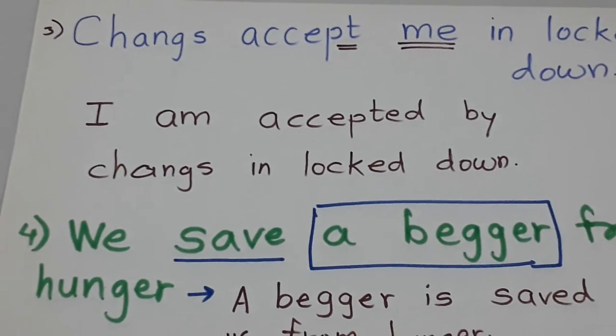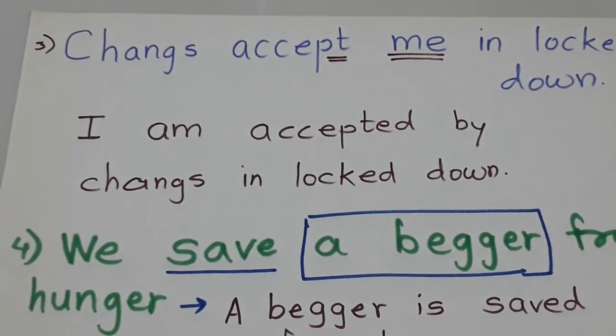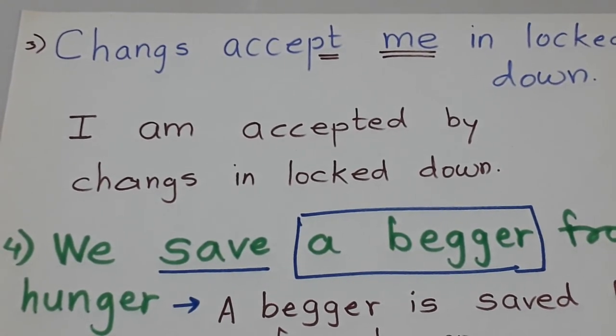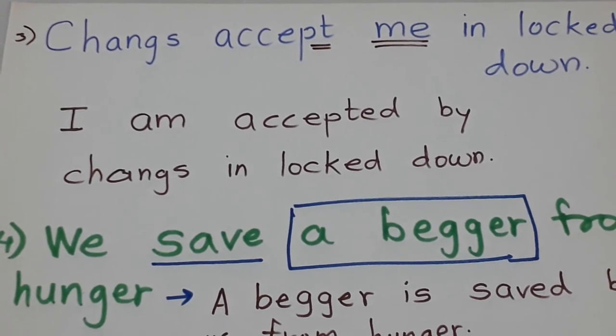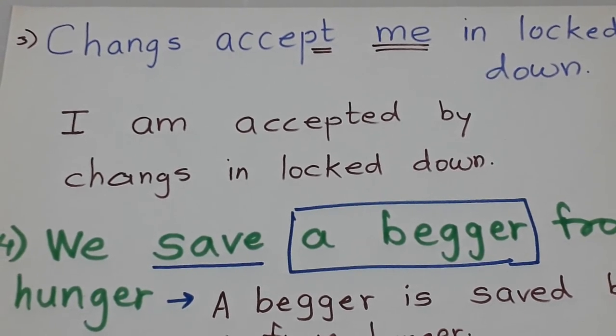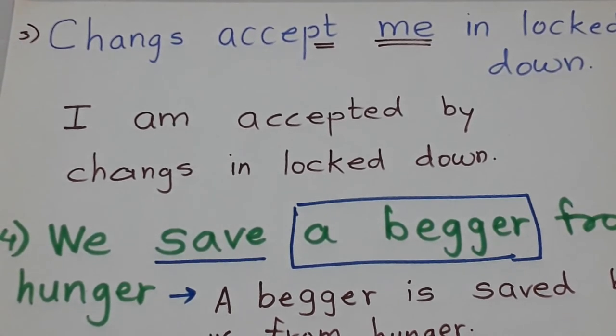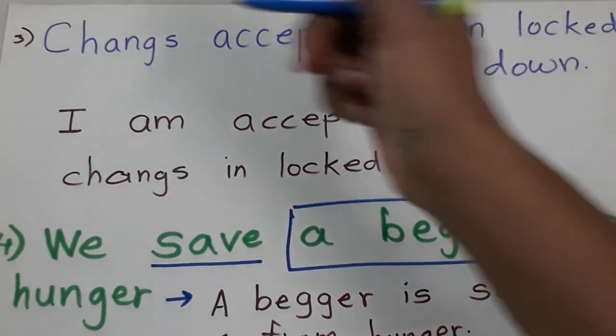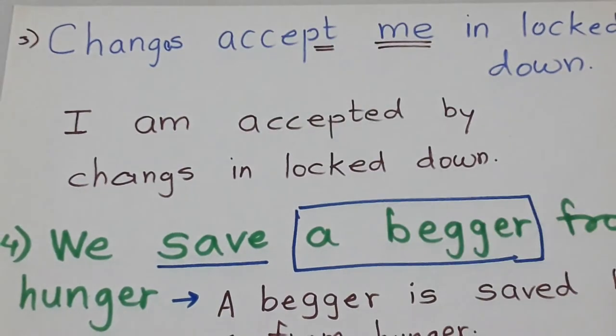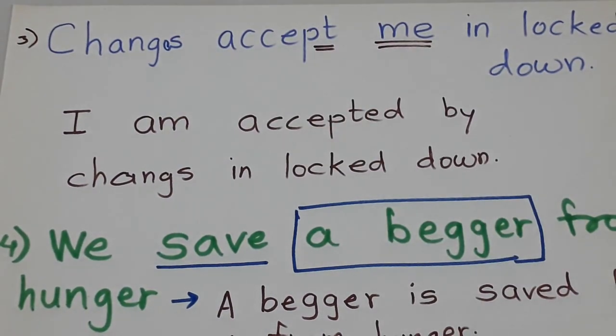Now in present tense, let's see singular example. Changes accept me in lockdown period. Changes - see there's an S here. So it becomes: Accepts me in lockdown. Now me at the start becomes I. I am accepted by changes in lockdown.